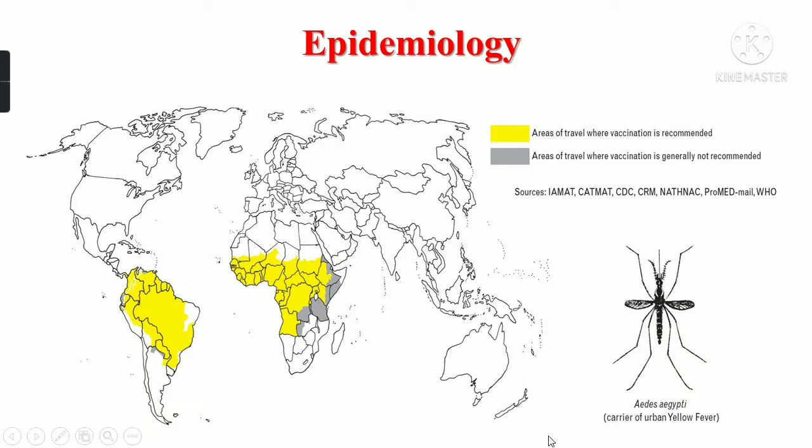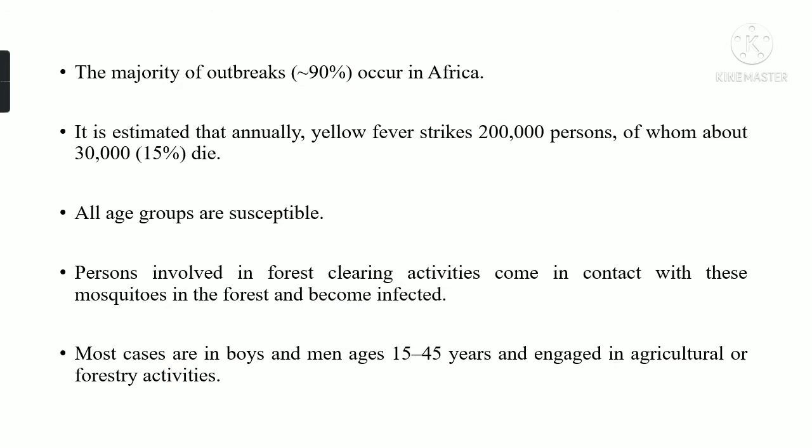As you can see from this map, yellow fever is highly prevalent in Africa and South American countries. The main factor for this disease is the Aedes aegypti mosquito. Approximately 90% of outbreaks occur in Africa. It is estimated that annually yellow fever strikes over 200,000 persons, of whom about 30,000 die, with a mortality rate of 15%. All age groups are susceptible. Most cases are in boys and men aged 15 to 45 years engaged in agriculture or forest activities, as they come into contact with these mosquitoes.